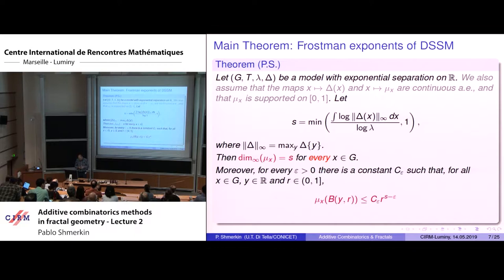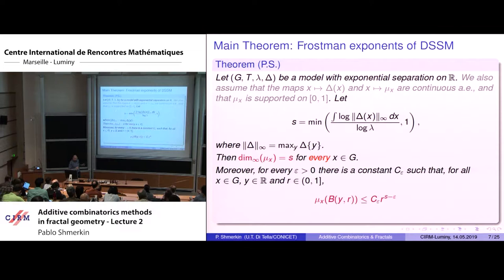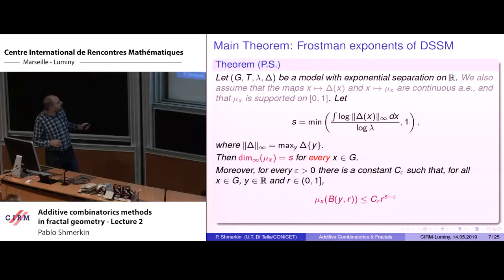This is a review of the main theorem from yesterday. We have a model as described before, with some technical assumptions in gray which are very mild — I need continuity of some maps, but only almost everywhere, not everywhere. This is important because in the main examples there are discontinuities, but very few. Then there is this number that is a natural upper bound: in the separated case (like Bernoulli convolutions with lambda less than 1/2), it is easy to see this is the Frostman exponent.